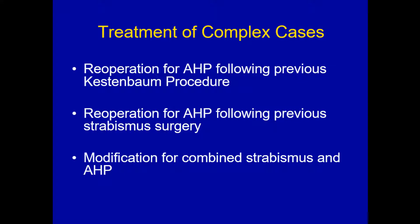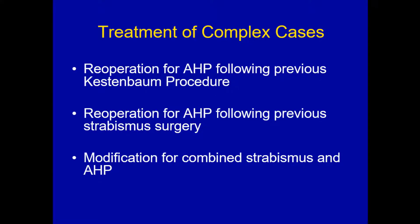What I want to emphasize is the treatment of complex cases. What about re-operation if you have anomalous head posture following a previous Kestenbaum procedure? Re-operation for anomalous head posture following previous strabismus surgery is not uncommon — patients have strabismus surgery when younger and then need anomalous head posture compensation surgery later. How do you modify for combined strabismus and anomalous head posture? I'm going to talk about a way to think about this so you can, for each individual patient, plan surgical muscles and surgical dosage.